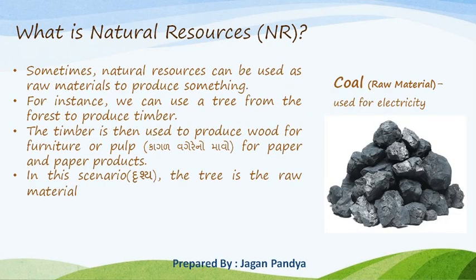Sometimes natural resources can be used as raw materials to produce something. When natural resources can be used as raw materials — for instance, we can use a tree from the forest to produce timber.